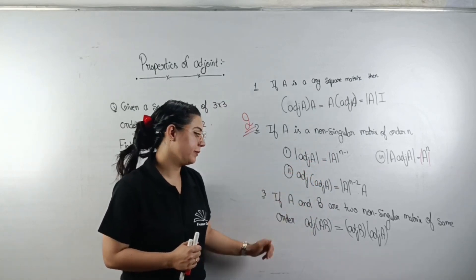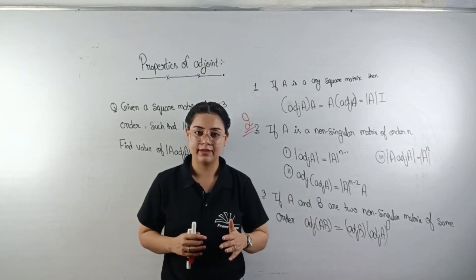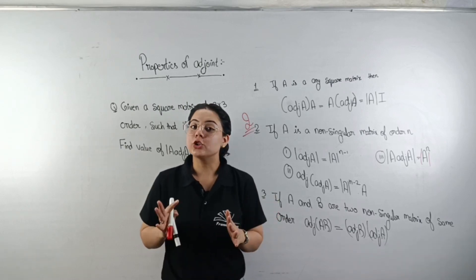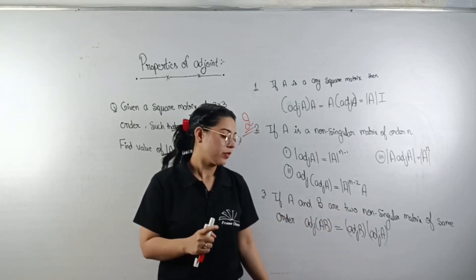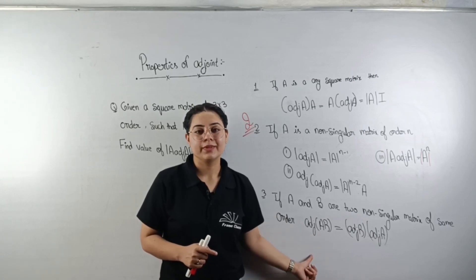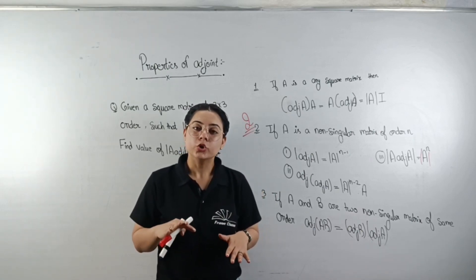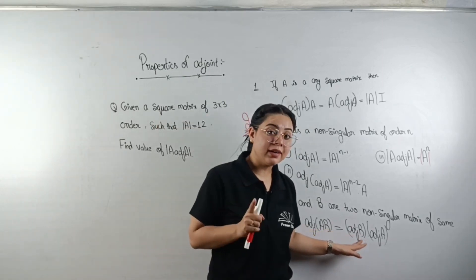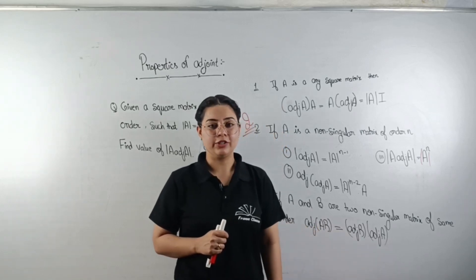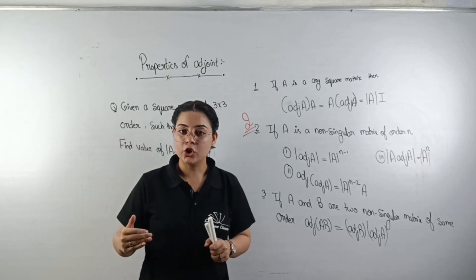The last property, property 3, states: if A and B are two non-singular square matrices of the same order, then adj(AB) equals adj(B) multiplied by adj(A) — meaning the order is reversed, B's adjoint comes first, then A's adjoint.